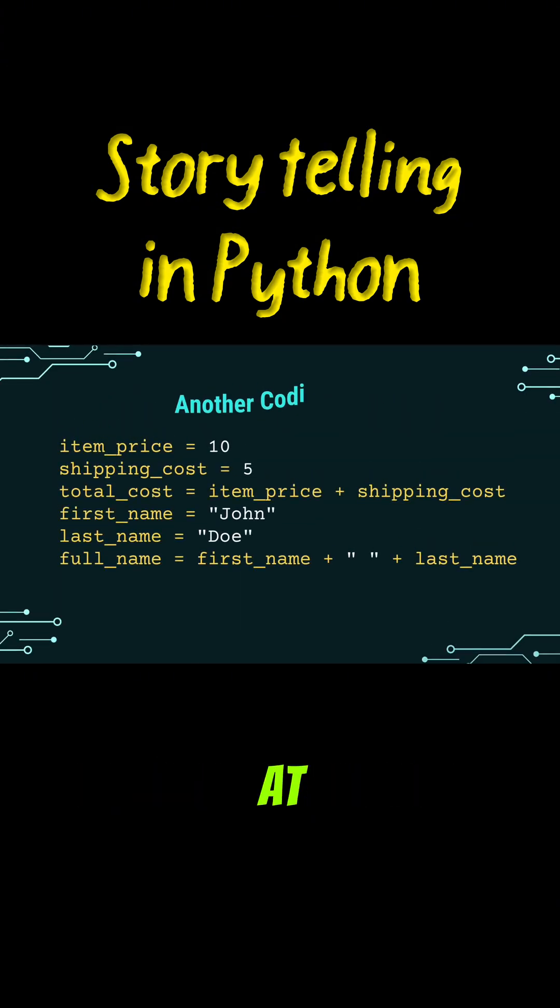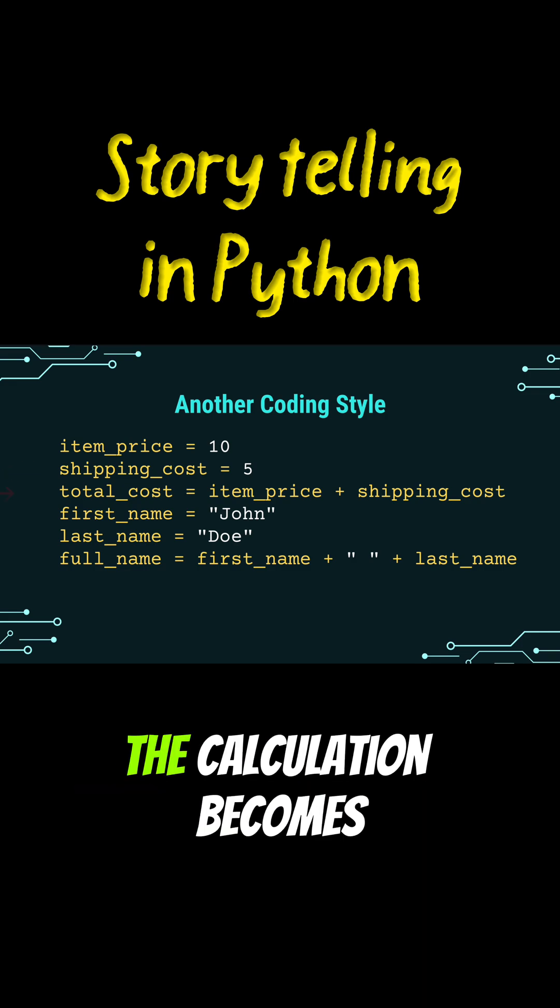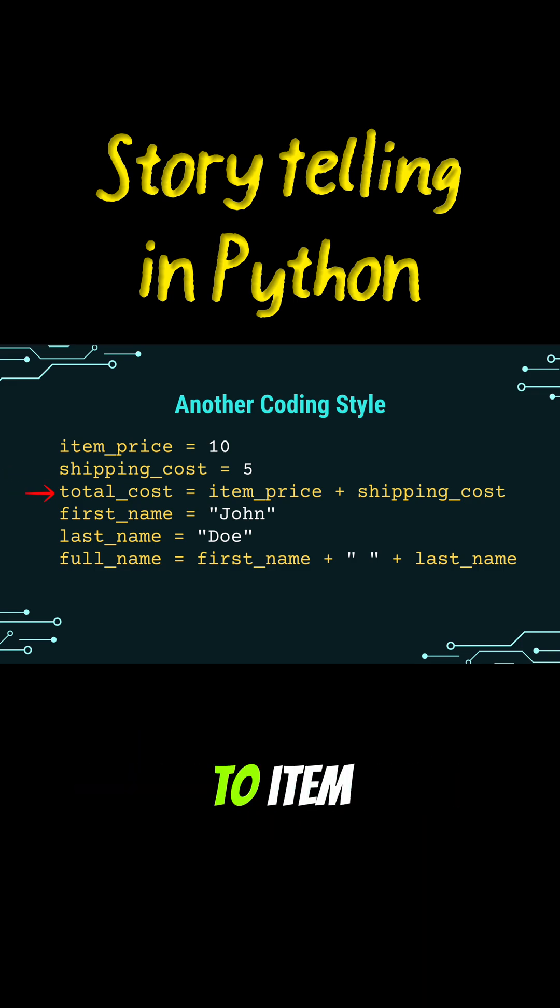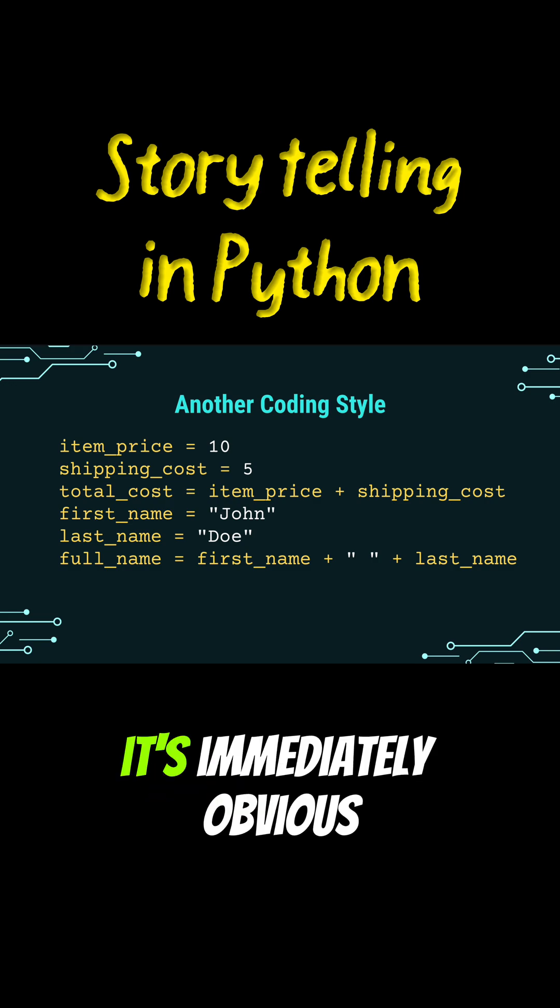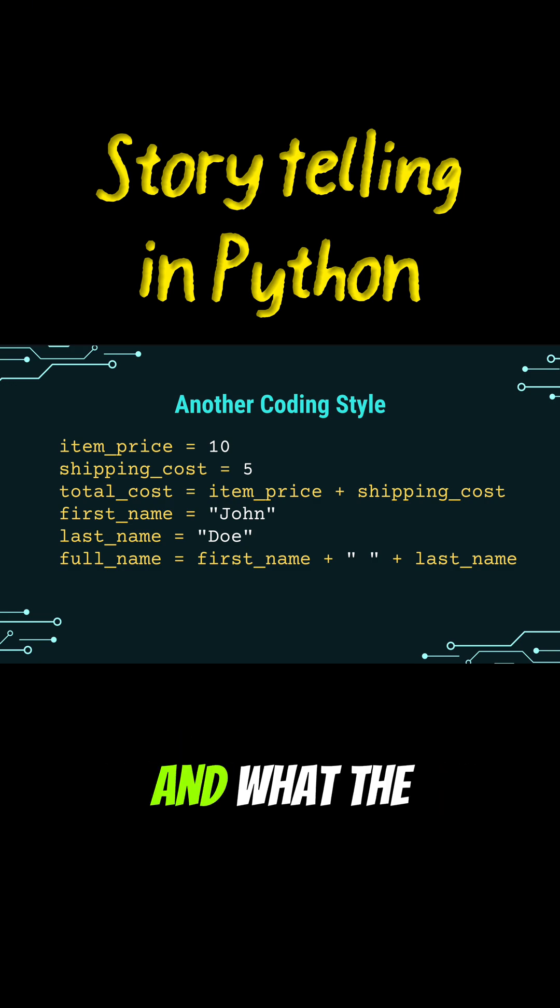Now, let's look at another way to write the exact same logic. Instead of x, we have item_price equals 10. Instead of y, shipping_cost equals 5. The calculation becomes total_cost equals item_price plus shipping_cost. Suddenly, the code tells a story. It's immediately obvious what these variables are and what the calculation does.